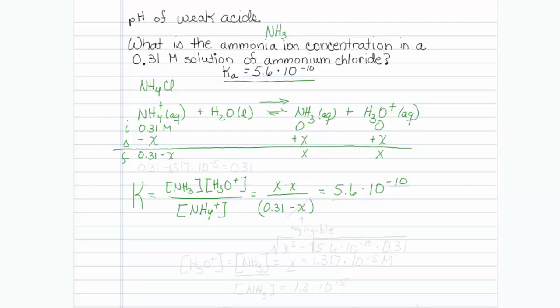At this point you might say to yourself that's a quadratic to solve. But I know that when I have a small equilibrium constant it's very likely that x is negligible compared to 0.31. So I'm going to simplify this equation and get rid of that particular x. So I'm left with x squared is equal to 5.6 times 10 to the minus 10 times 0.31.